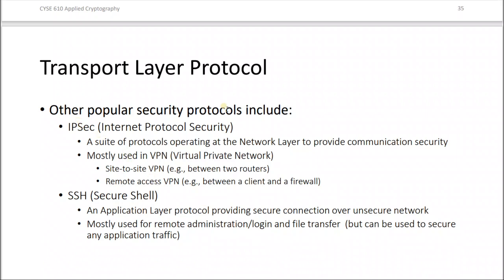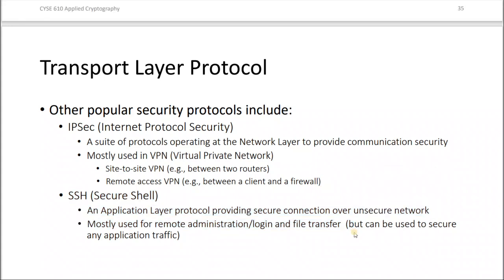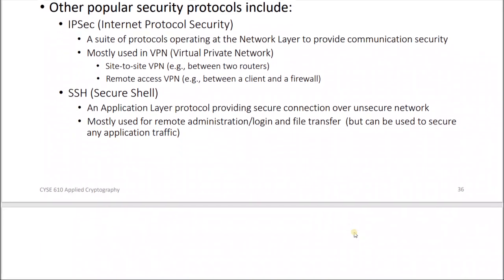Popular security protocols include IPsec (Internet Protocol Security), a suite of protocols operating at the network layer providing communication security, mostly used in VPNs — both site-to-site and remote access VPN. SSH (Secure Shell) is an application layer protocol providing secure connection over unsecured networks, mostly used for remote administration, login, and file transfer, but can be used to secure any application traffic.